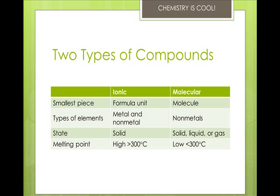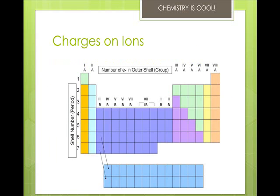The cations and anions surround each other, and the smallest piece is called a formula unit. For most of the Group A elements, location on the periodic table can tell what kind of ion they form. Elements in the same group have similar properties, as you know from the periodicity lectures.